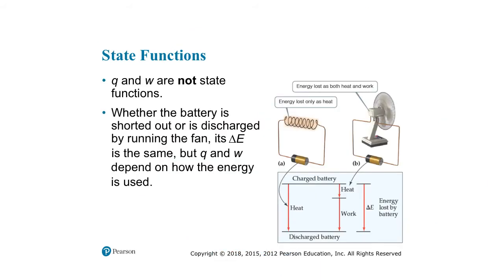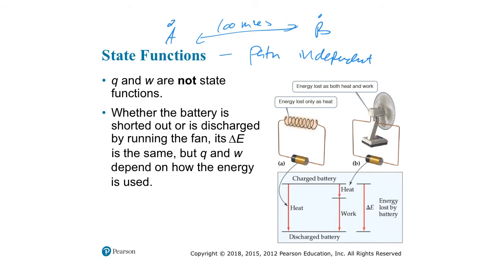A state function is path-independent. Like A and B on a map separated by 100 miles — how far away A is from B is a constant. The direction you take to get from A to B might take 110 miles one way, 102 miles another, or 100 miles direct. The miles you actually drive is dependent on the path, so that's not a state function. The state function is just how far away A and B are on the map.